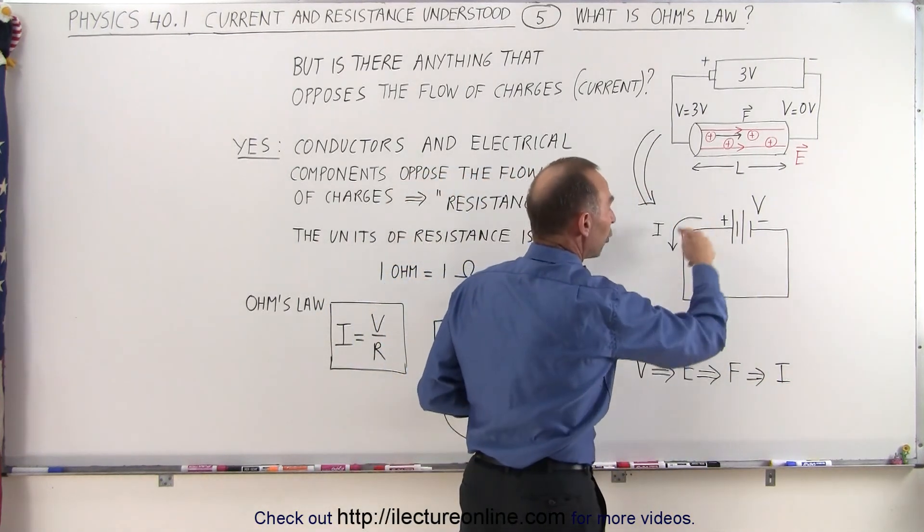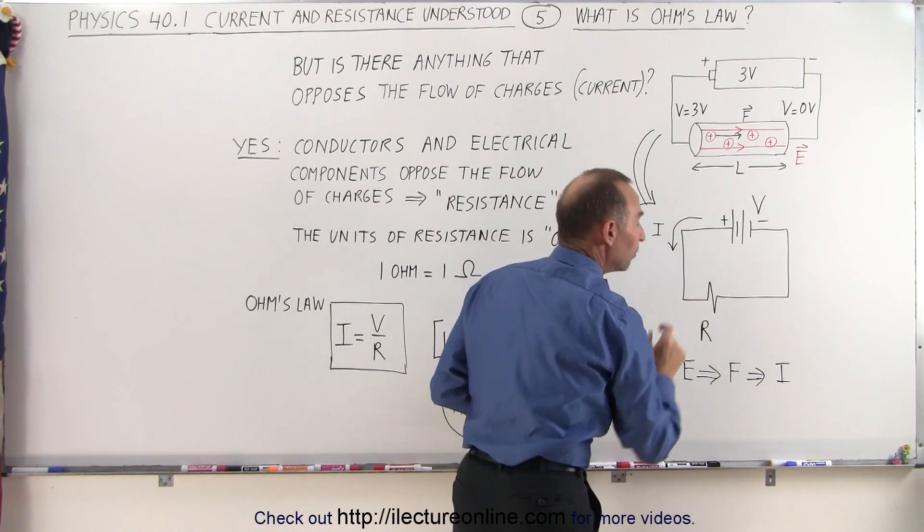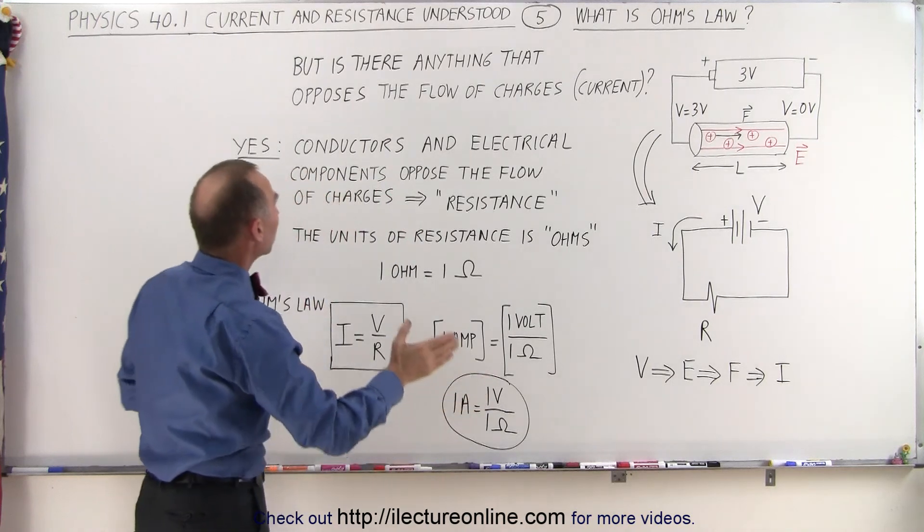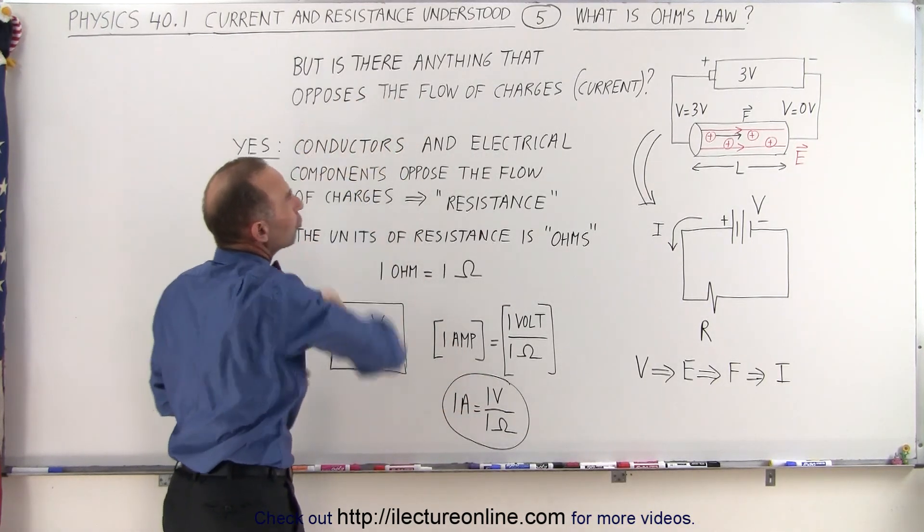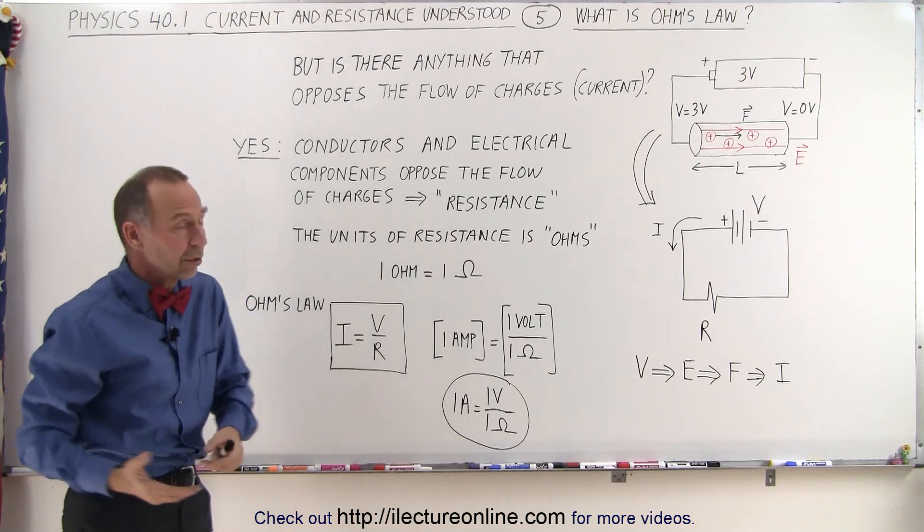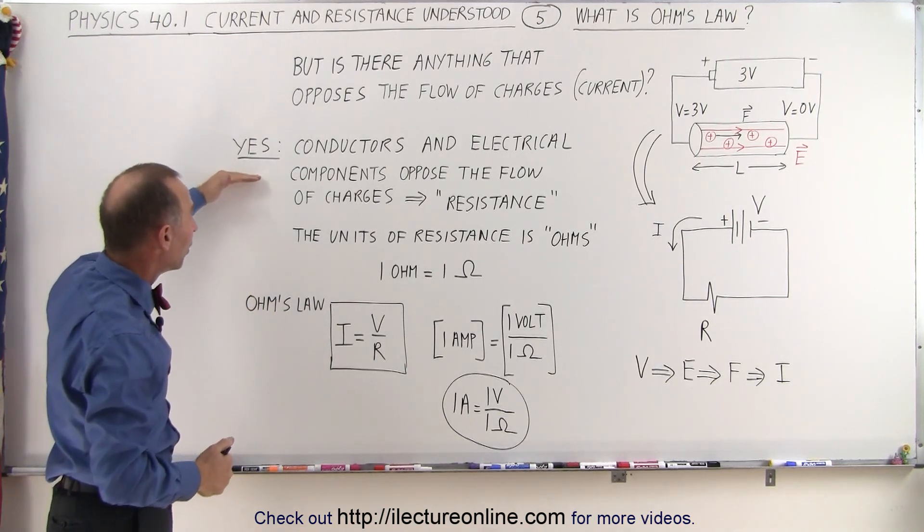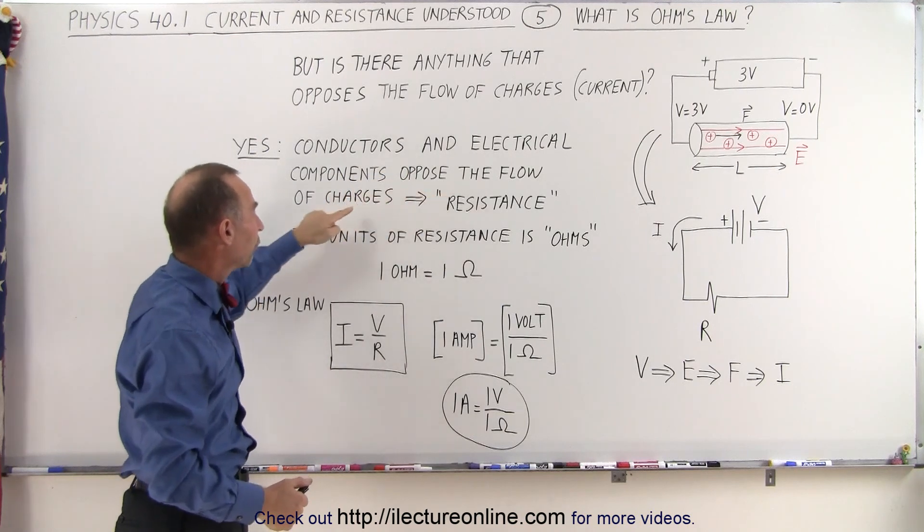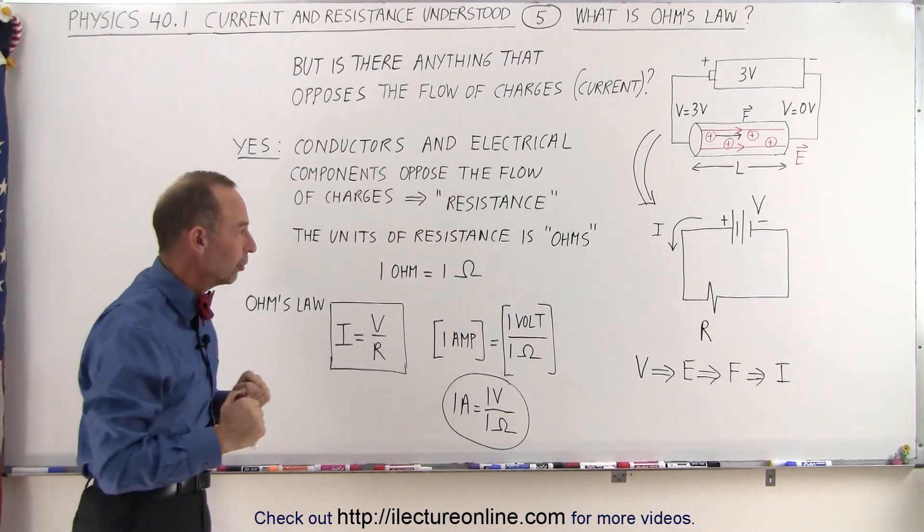But in the circuit we will also find another component which is called the resistance. So that answers the question: is there anything in the circuit that opposes the flow of charges or current? And the answer is yes. Conductors and electrical components oppose the flow of charges, which is called resistance.